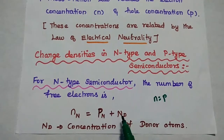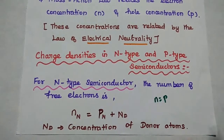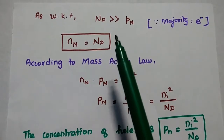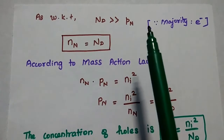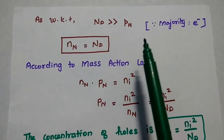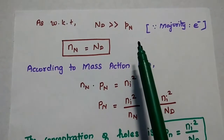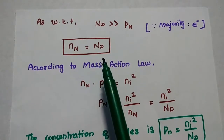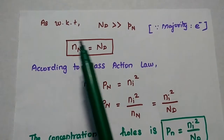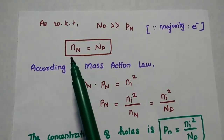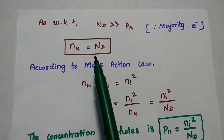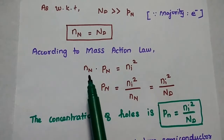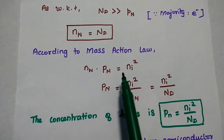So p-n plus n-d, where n-d is the number of donor atoms or the concentration of donor atoms. As we know that the number of donor atoms is far greater than the number of holes in n-type, we can simply ignore the number of holes. So the number of free electrons is equal to the number of donor atoms. According to mass action law, n into p-n is equal to ni squared.